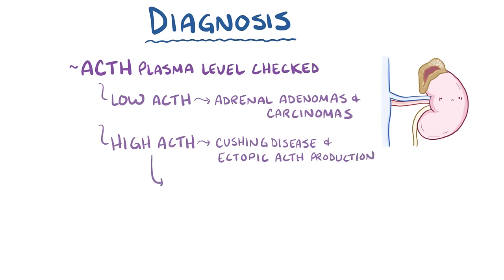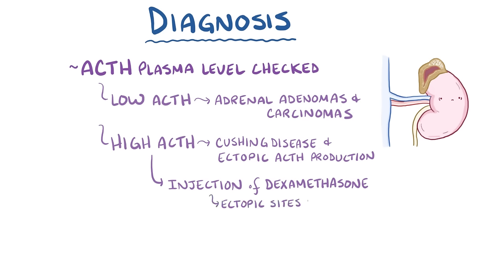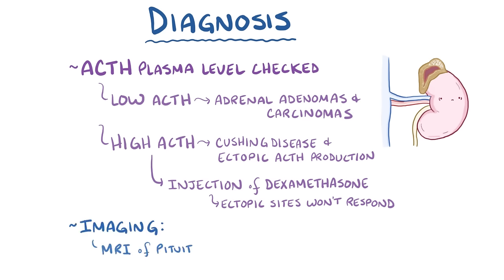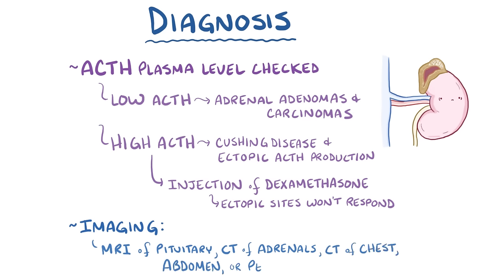If the ACTH level is high, the next step is to give an injection of a high dose of dexamethasone. Unlike pituitary adenomas, ectopic sites of ACTH production typically don't respond even to high doses of dexamethasone, and the serum cortisol remains high. After all that, imaging can be used—an MRI of the pituitary gland in the case of Cushing disease, a CT scan of the adrenals when an adrenal pathology is suspected, or a CT of the chest, abdomen, or pelvis if there seems to be an ectopic site of ACTH production.